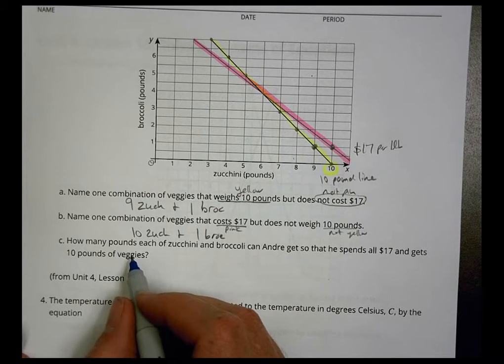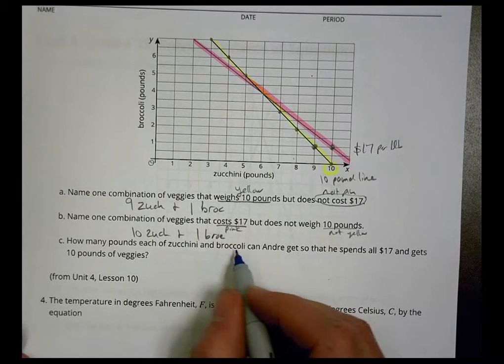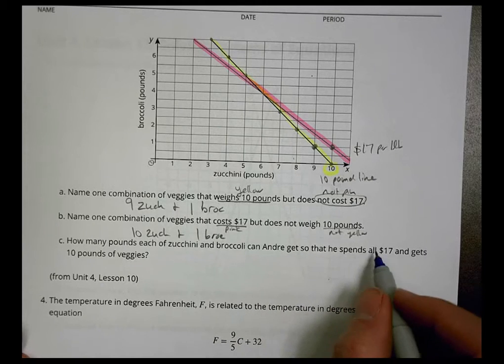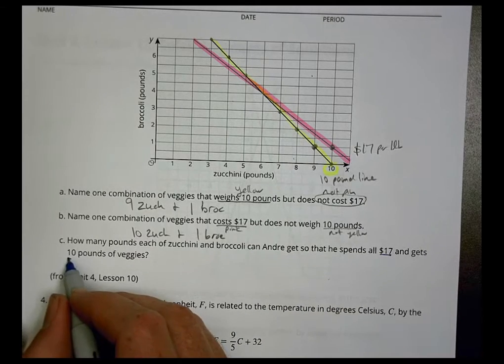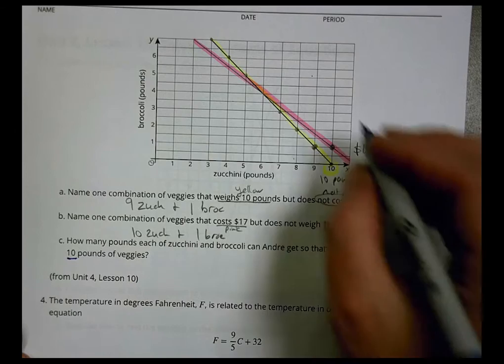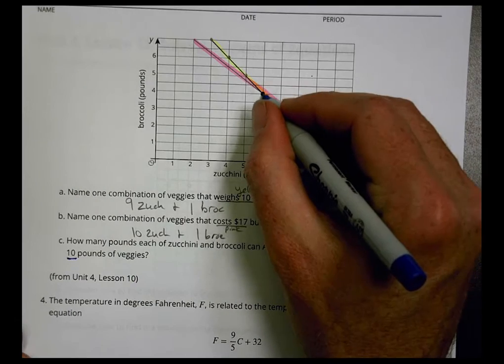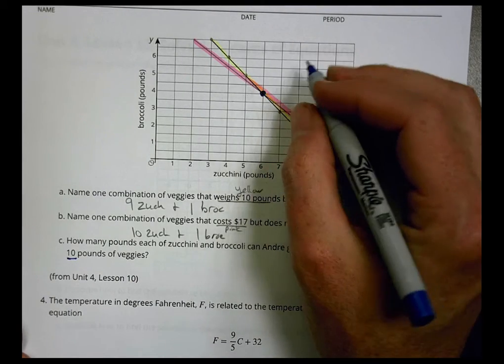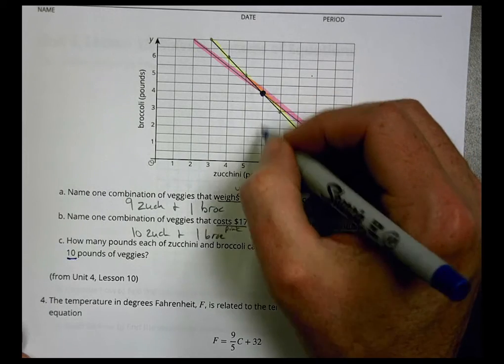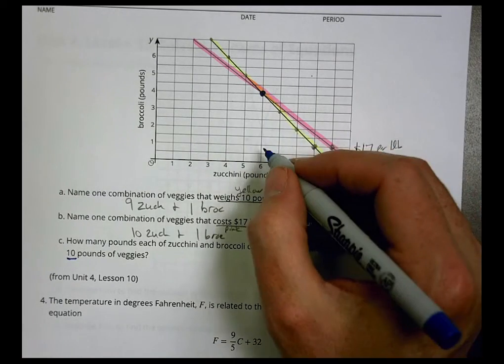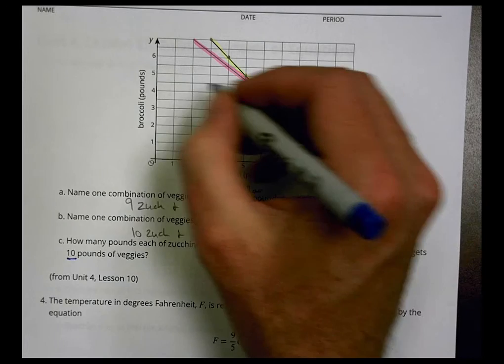What we're looking for is how many pounds of each of zucchini and broccoli can Andre get so that he spends all $17 and gets 10 pounds. Well, that's going to take place at our point of intersection, or our solution to the equation there. And that takes place at 6, 4.